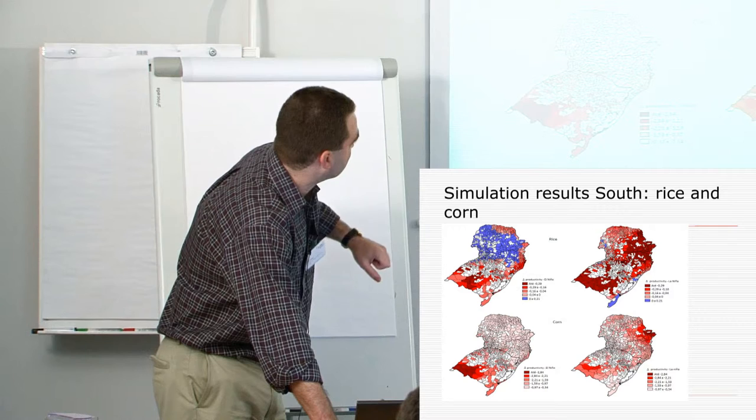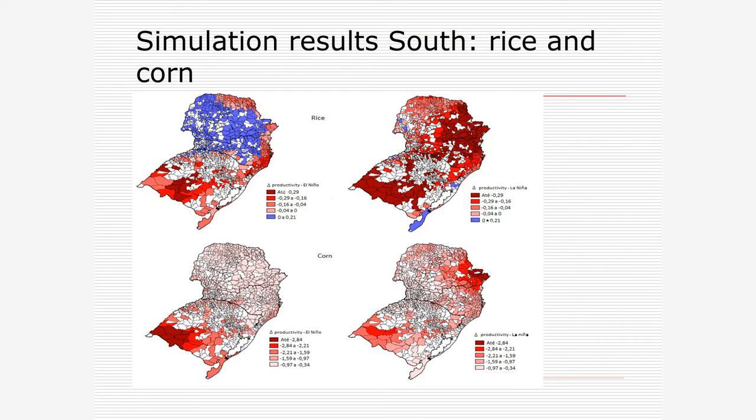We have also the same kind of maps that you can consult in the paper. The red parts are the most affected ones. The blue ones are the least affected. Here in the extreme south of Brazil, it's affected by droughts during La Niña.